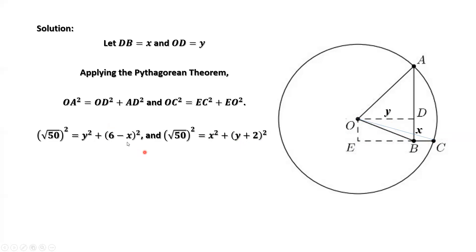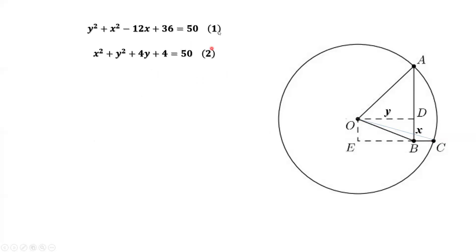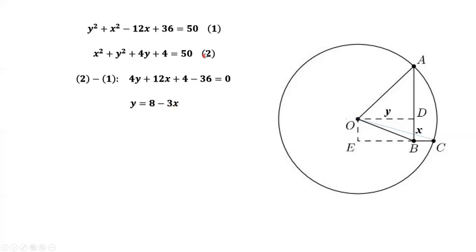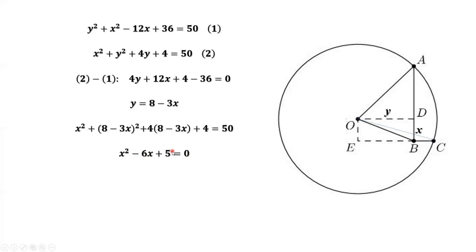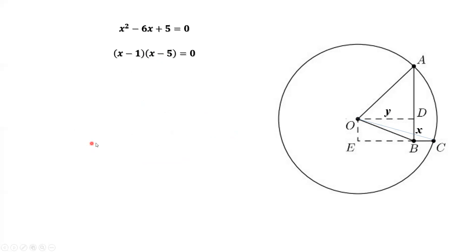We simplify both equations, then we have result 1 and result 2. Equation 2 minus equation 1, we have 4Y plus 12X plus 4 minus 36 equals 0. Then we have Y equals 8 minus 3X. In the second equation, we replace Y by 8 minus 3X. Simplify this equation, then we have X squared minus 6X plus 5 equals 0. We factor the left-hand side, then we have two solutions for X: X equals 1 and X equals 5.